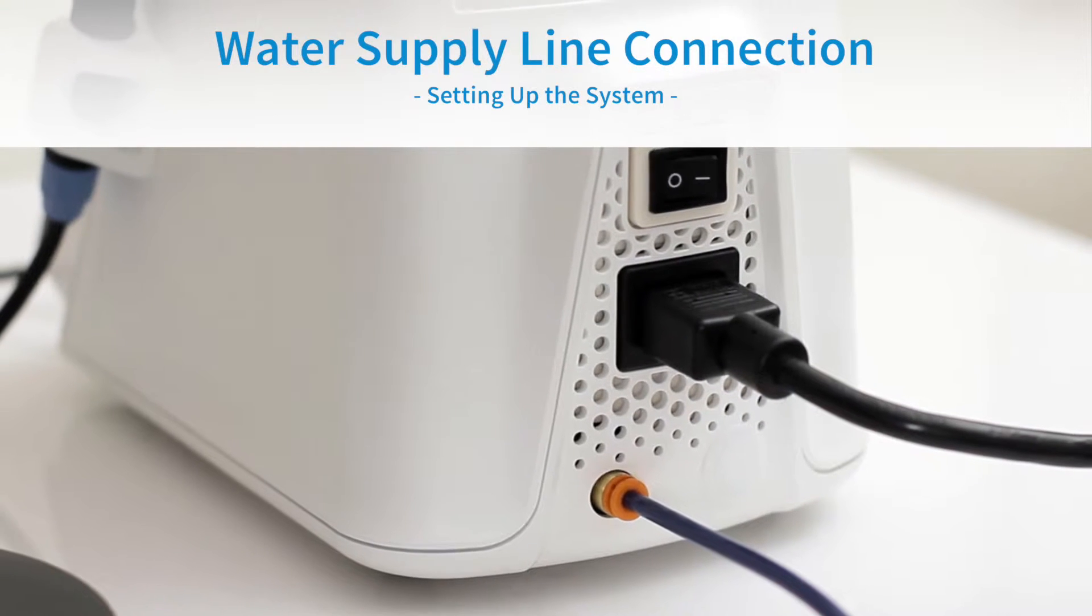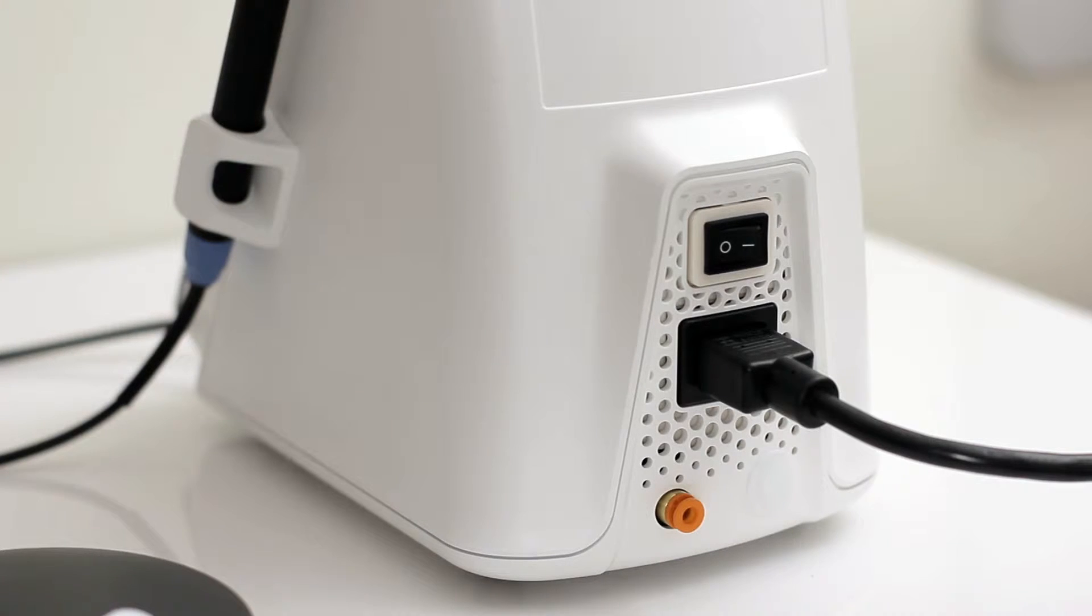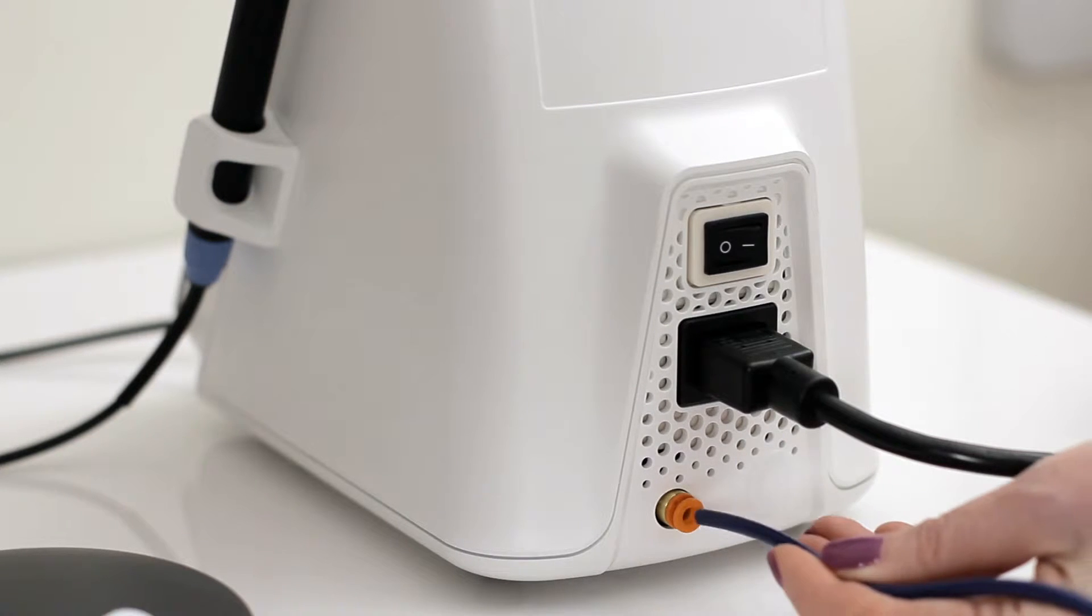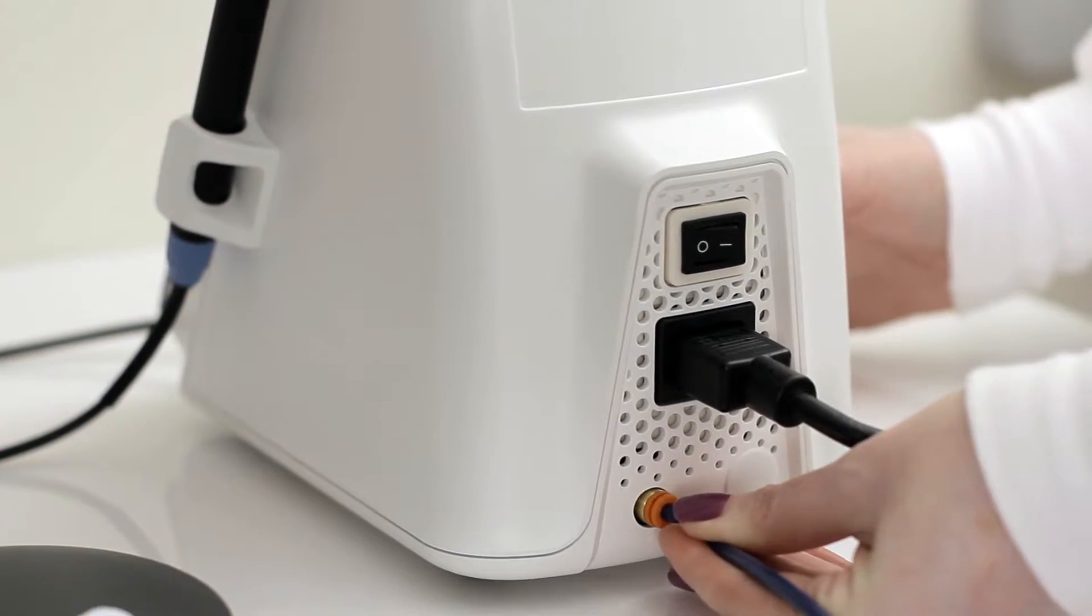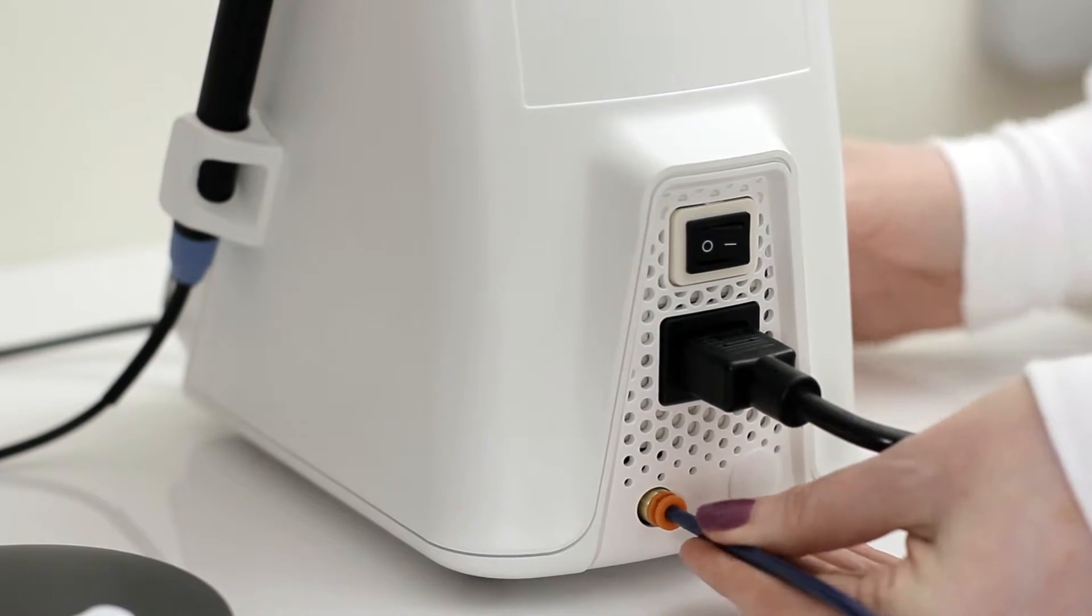Water Supply Line Connection. To connect the water supply, insert the blue waterline hose into the orange water inlet connector until it's fully seated. Tug gently to ensure the waterline is secure.